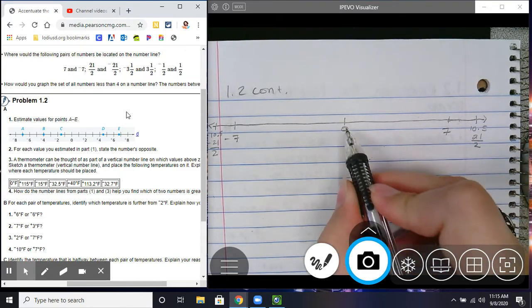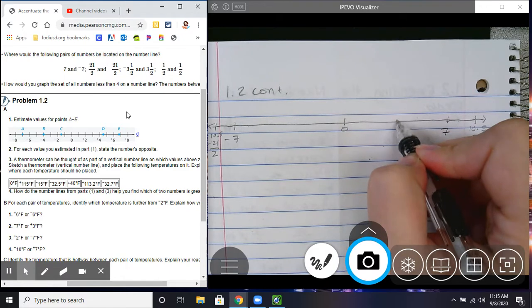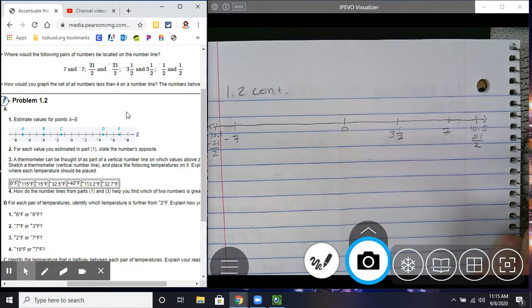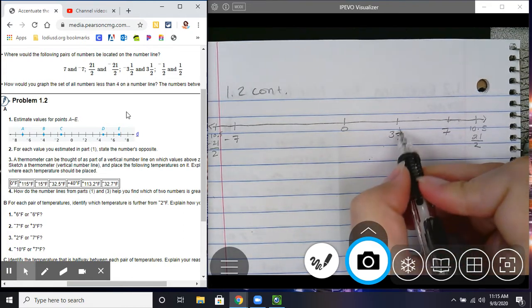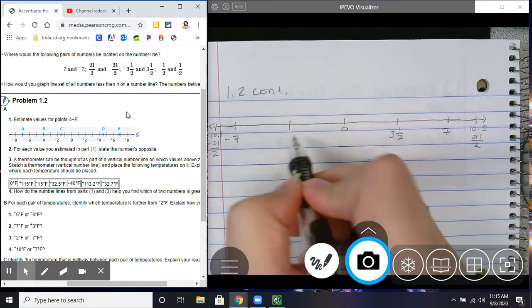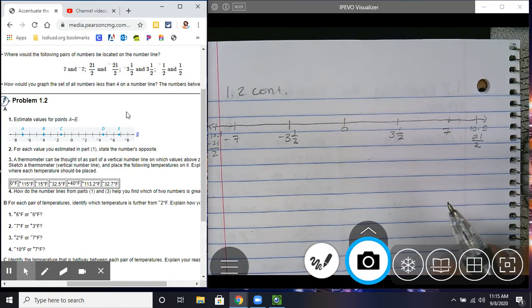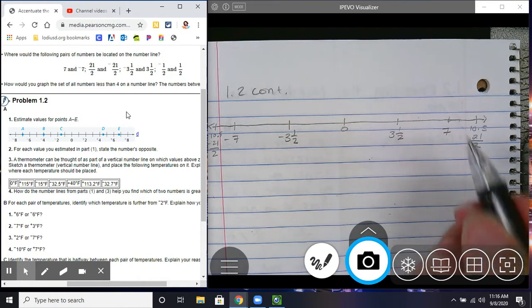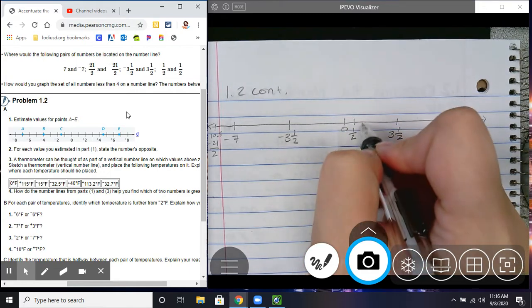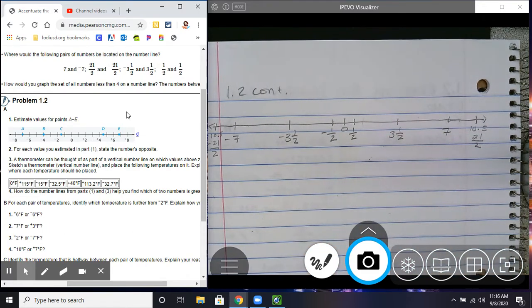So, the next one is negative 3 and a half and 3 and a half. So, if 7 is here, 0 is here, 3 and a half is going to be exactly halfway between those two. So, I'm going to ballpark it right around here. And then this would be 3 and 1 half. 0.5 and 1 half like this, exactly the same thing. And then same thing here, negative 3 and a half would go there, halfway between 0 and negative 7. And then negative 1 half and 1 half. So, I'm going to put a half about right here because it's between 0 and 1. And then negative 1 half would go right there.